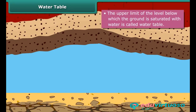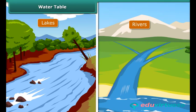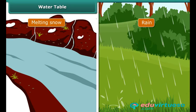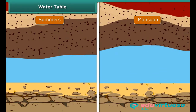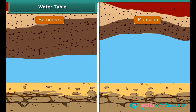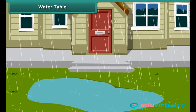The upper limit of the level below which the ground is saturated with water is called the water table. Groundwater is found below the water table. Runoffs from lakes and rivers, melting snow, and rain lead to the formation of the water table. Seasonal fluctuations in the water table are common — during summers the water table goes down, while during monsoon its level rises.